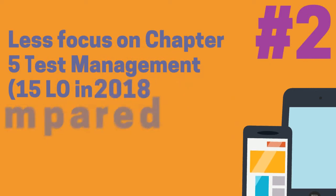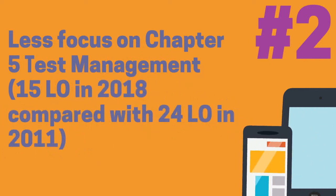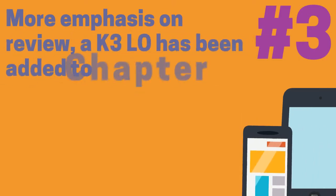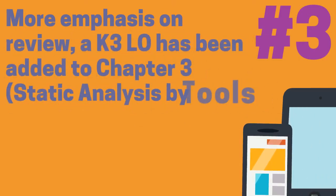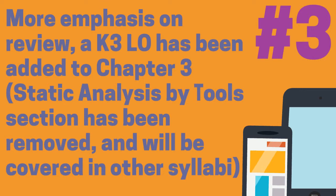Less focus on chapter 5 test management: 15 learning objectives in the 2018 syllabus, compared with 24 learning objectives in the 2011 syllabus. More emphasis on review — K3 learning objectives have been added to chapter 3. The static analysis by tools section has been removed and will be covered in another syllabus.